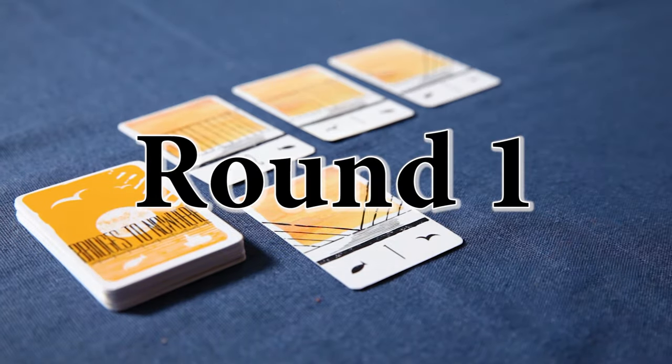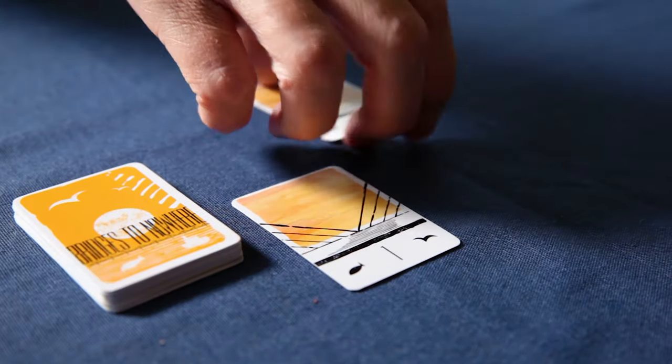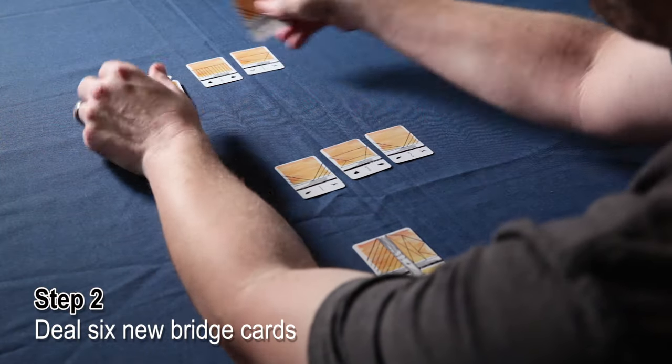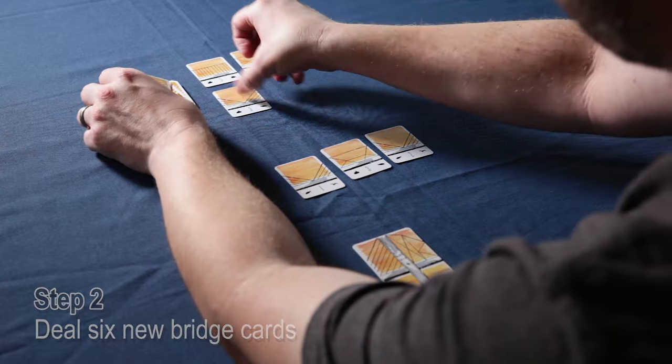After randomly determining who will draft first, players then take turns drafting the cards until each player has three. Then deal the next six cards face up, but don't draft them yet. Those are for the next round.